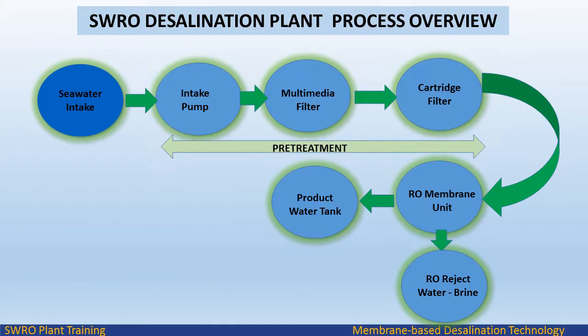The raw water is drawn from an open sea intake structure. The intake screens and seawater pipeline are sized for maximum raw water flow according to requirement. This includes a 10% margin and also accounts for additional flow required in case a filter-to-waste step is applied after backwashing the dual-media filters.